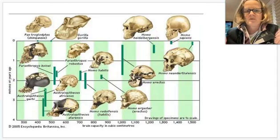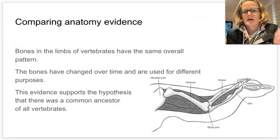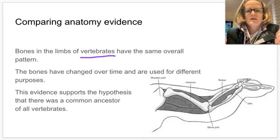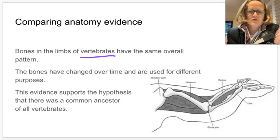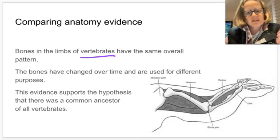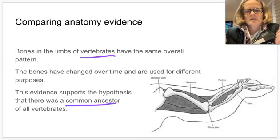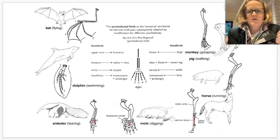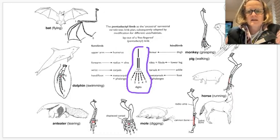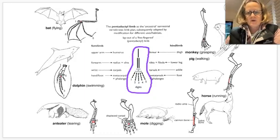Due to limitations with using just one piece of evidence, we look at more than one type of evidence. For anatomical evidence, if we think about vertebrates — things with a backbone — we have the same overall pattern in the bones of our limbs, both arms and legs. These bones have changed over time in different vertebrates to be used for different purposes, supporting the hypothesis that there was a common ancestor of all vertebrates.